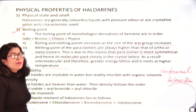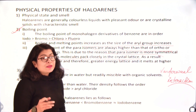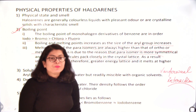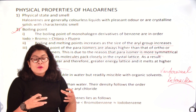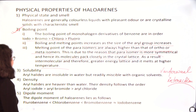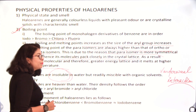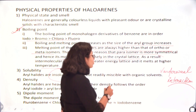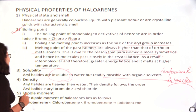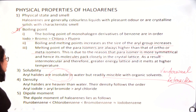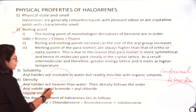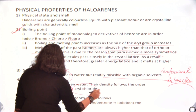Regarding solubility, alkyl halides or aryl halides are very sparingly soluble in water because hydrogen bonding in the case of halogens is very weak. So they are sparingly soluble or nearly insoluble in water, but are highly soluble in organic solvents. Regarding density, aryl halides are heavier than water; the density follows the order iodide having higher density due to greater mass, then bromide, then chloride.